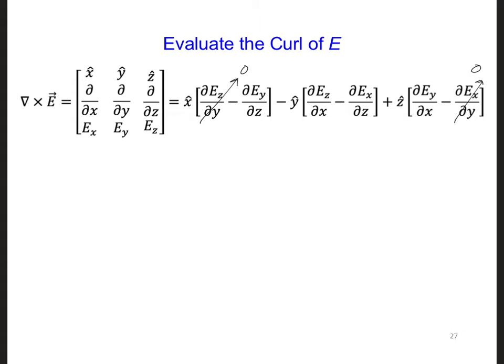Also, Ey is 0, since we're only solving for Ez and Ex components. Ey is not going to change our solution. All that is left from the curl operation is minus y hat dEz/dx minus dEx/dz.